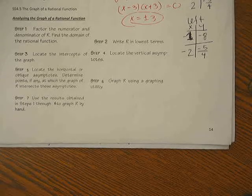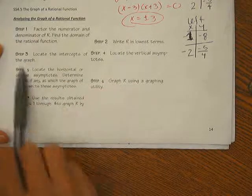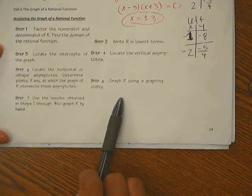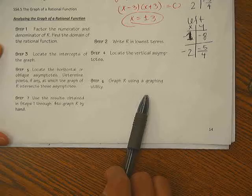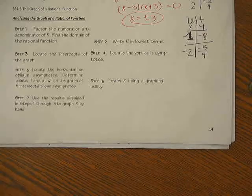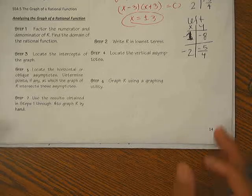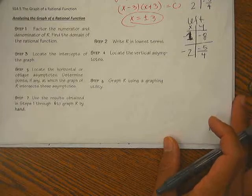So here we go, the graph of a rational function. On this unit we are going to put all of the information that we have studied in the last 4 sections together and have a bigger picture, a complete picture of what a rational function is supposed to be like.